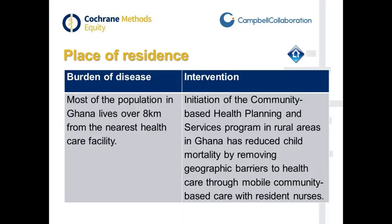For place of residence, for example, in Ghana, the population lives quite far from the nearest health facility. The effective intervention is a community-based health planning and services program that actually reduced child mortality by removing these geographic barriers, improving access to healthcare, and reducing inequities.